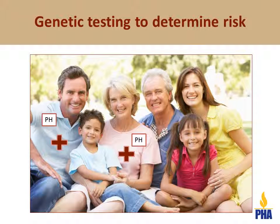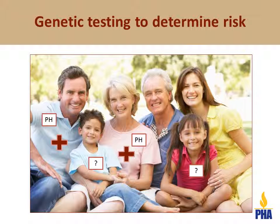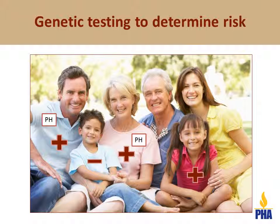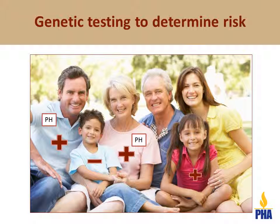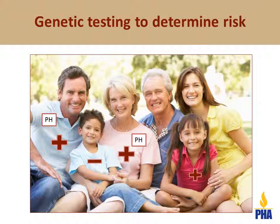If genetic testing identifies a mutation that is the cause of a person's pulmonary hypertension, that person's family members can have genetic counseling and testing to determine if they have the same gene mutation and are at risk to develop the disease. Family members will need a copy of the test report to ensure they get the correct type of genetic testing. If a family member is found to have the mutation, this does not mean they will definitely develop pulmonary hypertension. It only means they are at an increased risk and should have a screening echocardiogram with a cardiologist. Remember, more than half of people with BMPR2 mutations will never develop pulmonary hypertension.